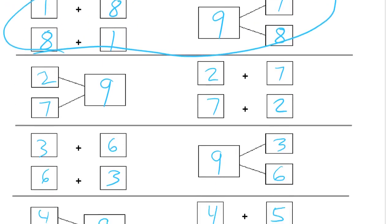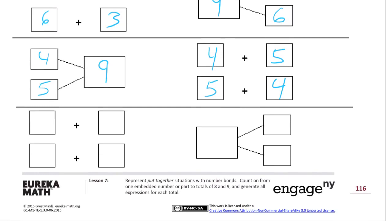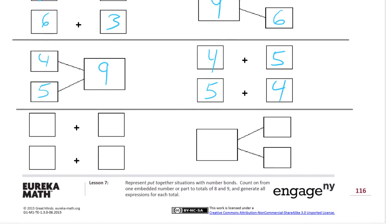And those are all the ones except for, oh, 0, right? 0 and 9 make a total of 9. So our addends are 0 plus 9. And we switch the order, we have 9 plus 0.